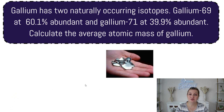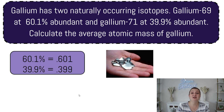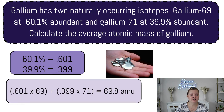Last one. Gallium has two naturally occurring isotopes: gallium-69 at 60.1% abundant and gallium-71 at 39.9% abundant. We're going to calculate the average atomic mass of gallium — and yes, gallium is that cool element that melts in your hand because the heat of your hand can melt it; low melting point, pretty cool. We're going to start by changing our percentages into a decimal, so we get 0.601 and 0.399. Then we're going to multiply by the mass of each isotope: the first number times 69, and the second times 71. Multiply first and then add in your calculator, and you end up getting 69.8 AMU.